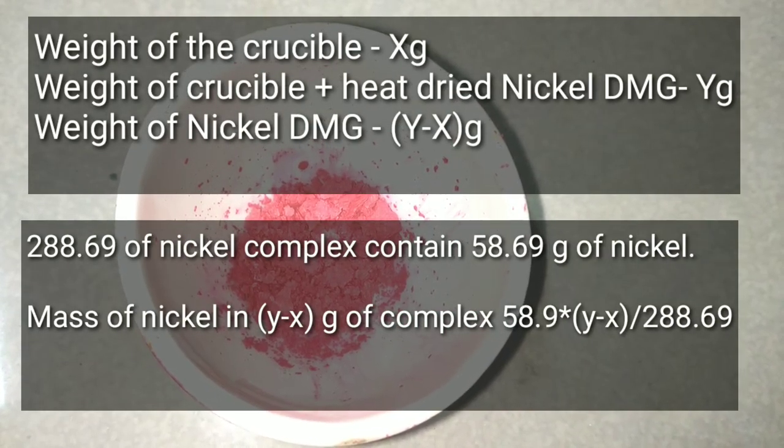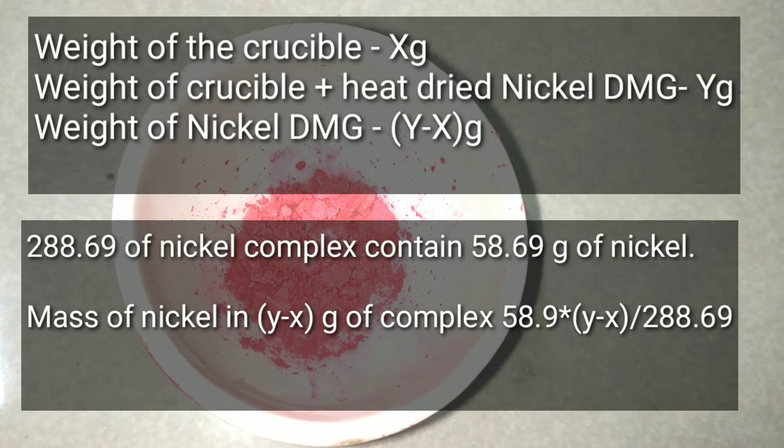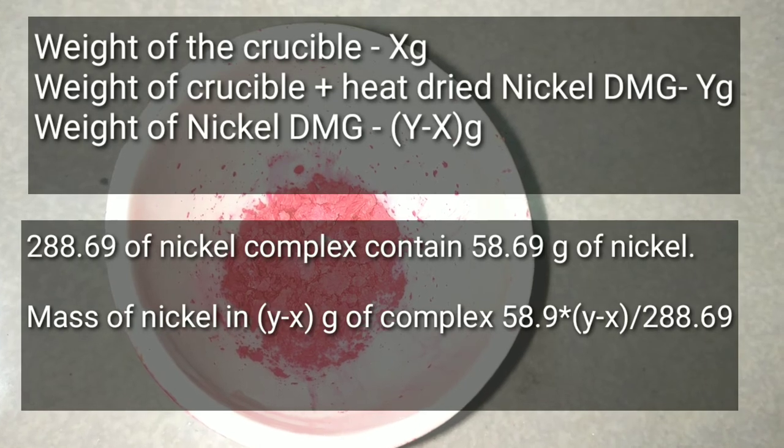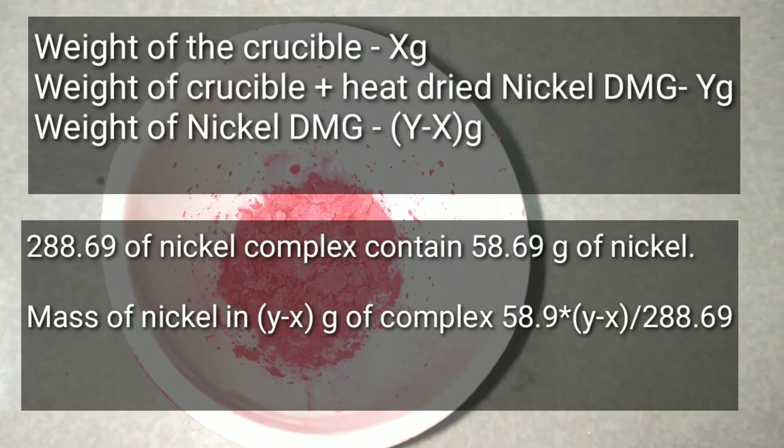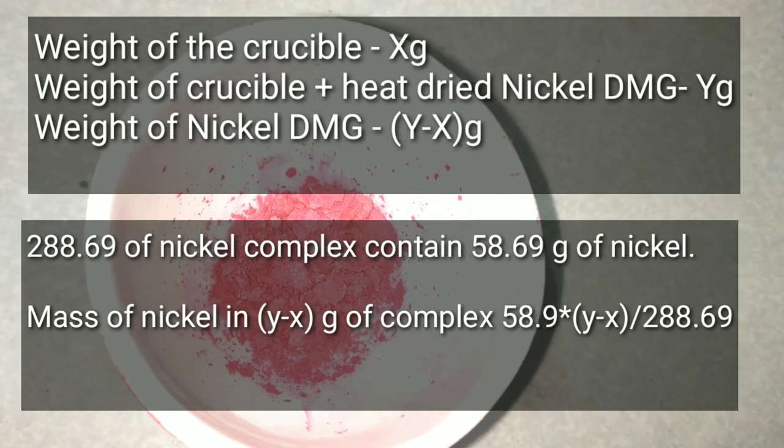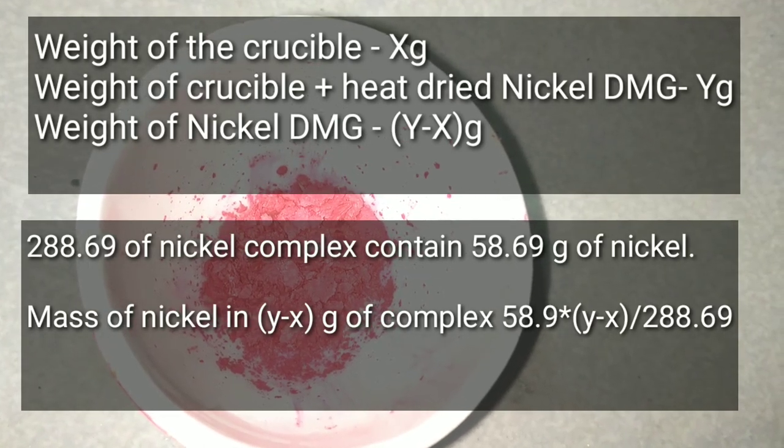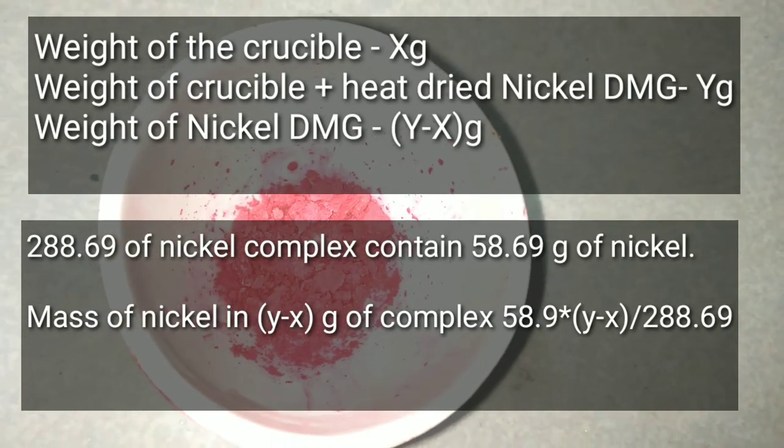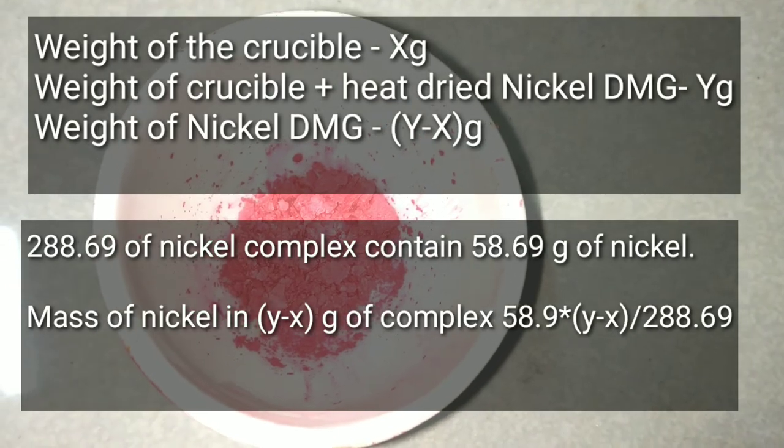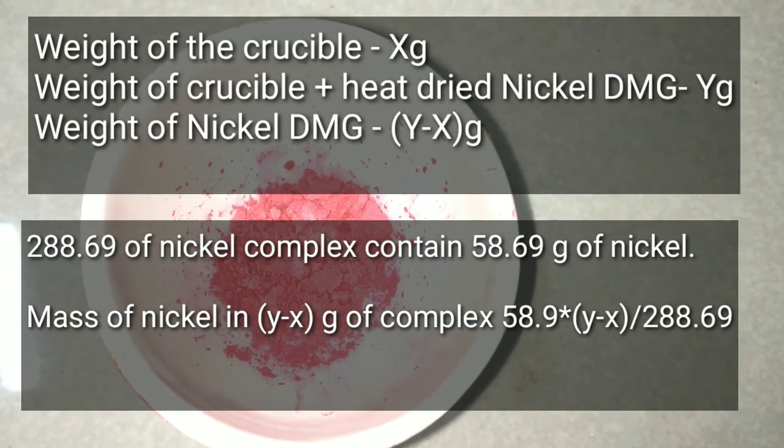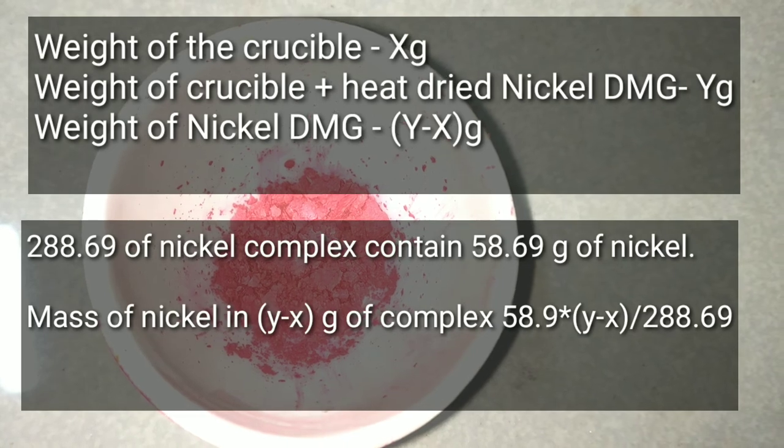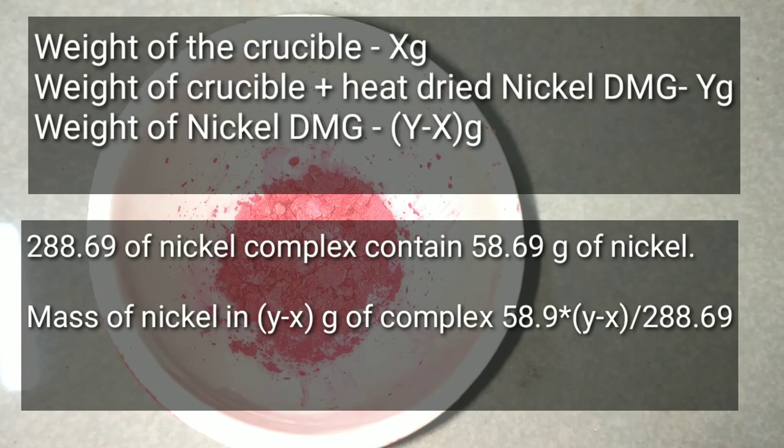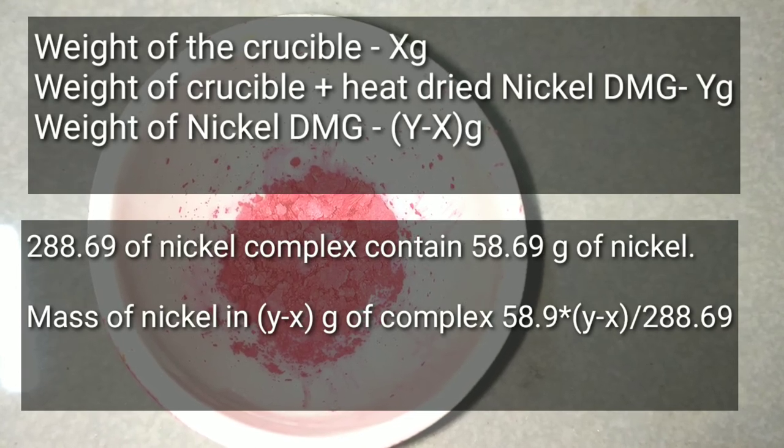And this is how we do the calculation. The weight of the crucible should be known previously. Now after drying the precipitate in the crucible, we take the weight of the crucible along with the complex and we take it as Y. Then weight of the nickel dimethylglyoxime complex alone would be Y minus X. Then we should apply this theory that 288.69 grams of nickel complex contains 58.69 grams of nickel. By using this theory, we can calculate the mass of nickel present in Y minus X grams of complex by this formula.